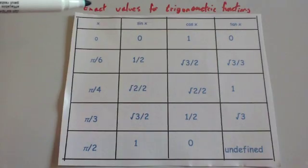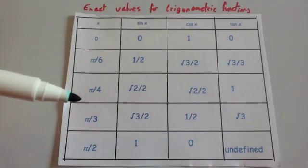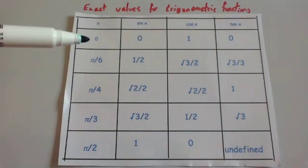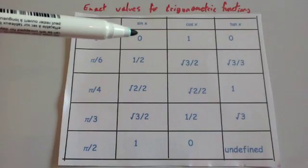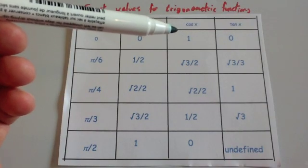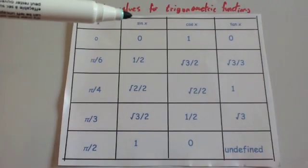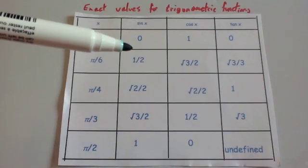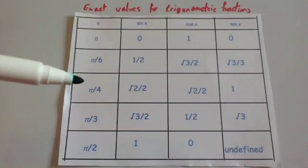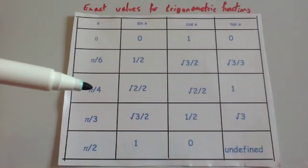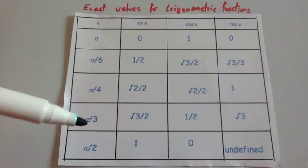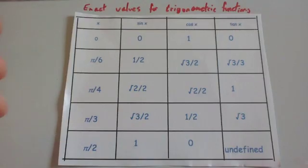Just to point out, these trig values also work when you're in radians. 0° is 0 radians, 30° is π/6, 45° is π/4, 60° is π/3, and 90° is π/2. So sine of π/6 in radians is a half, and all the values are exactly the same for those angles in radians.